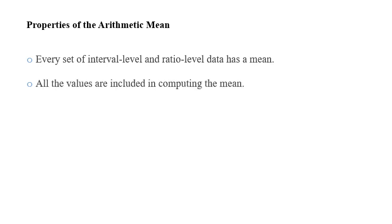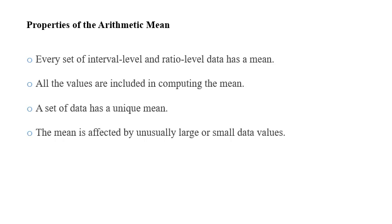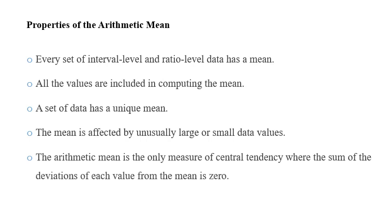Properties of arithmetic mean could be summarized as following: every set of interval level and ratio level data has a mean, all the values are included in computing the mean, a set of data has a unique mean, the mean is affected by either larger or small data values. The arithmetic mean is the only measure of central tendency where the sum of the deviation of each value from the mean is zero.